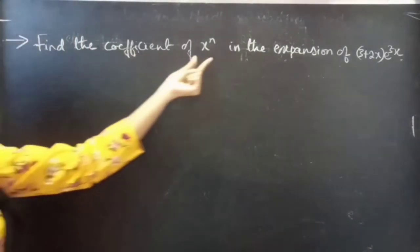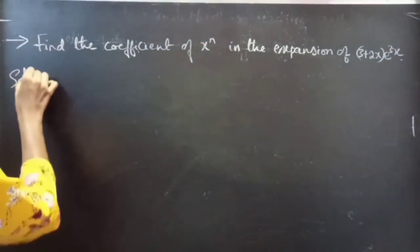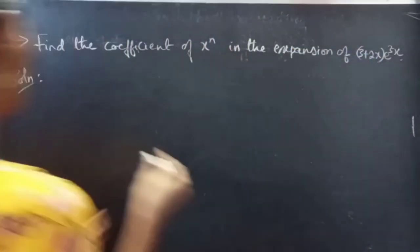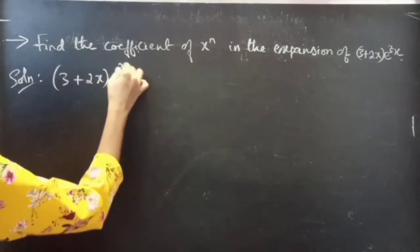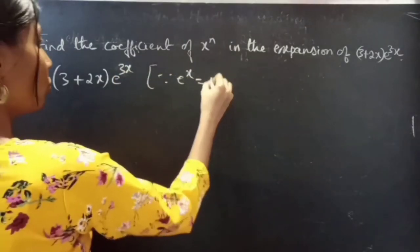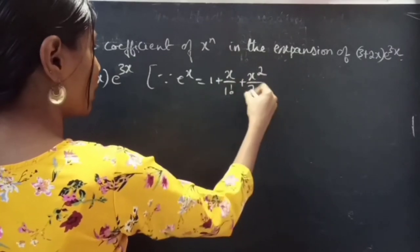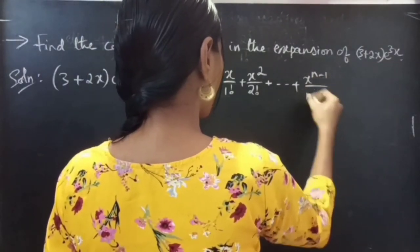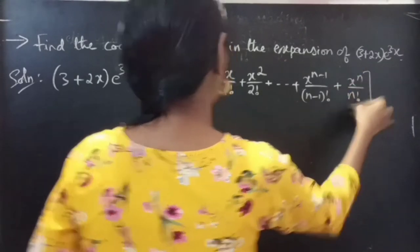Problem: find the coefficient of x power n in the expansion of (3 plus 2x) into e power 3x. Solution: we are asked to find the coefficient of x power n in the expansion of this expression. We are given the expression (3 plus 2x) into e power 3x. Since we have e power x equals to 1 plus x by 1 factorial plus x squared by 2 factorial plus so on plus x power (n minus 1) by (n minus 1) factorial plus x power n by n factorial.